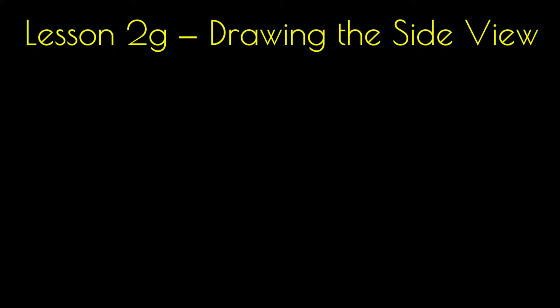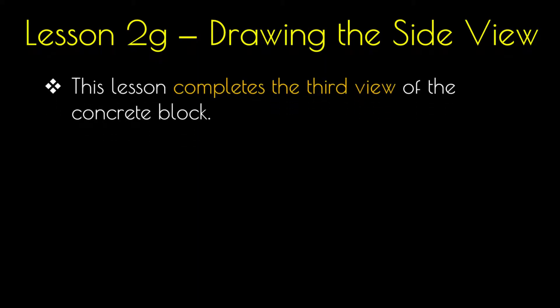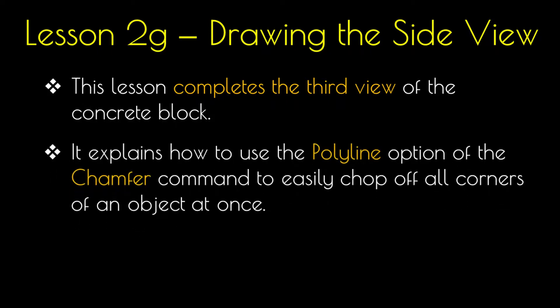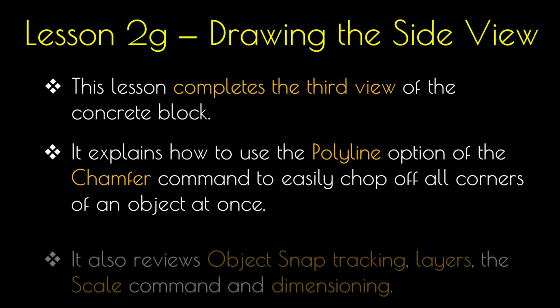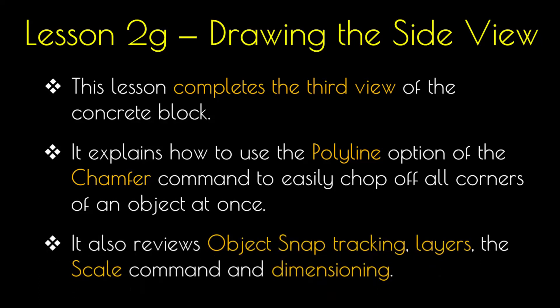Lesson 2G: Drawing the side view. This lesson completes the third view of the concrete block. It explains how to use the polyline option of the chamfer command to easily chop off all the corners of an object at once. It also reviews object snap tracking, layers, the scale command, and dimensioning.